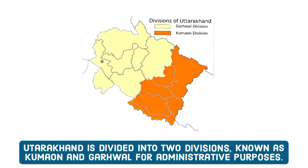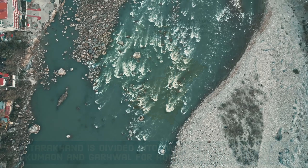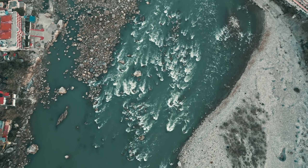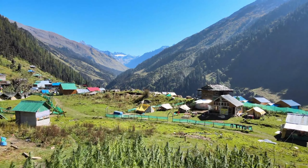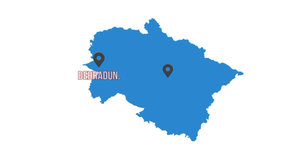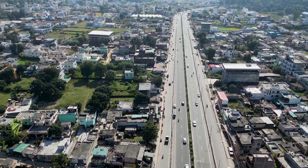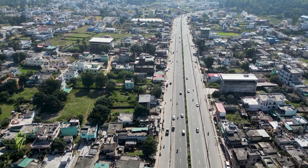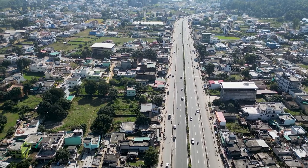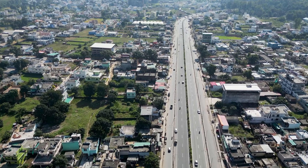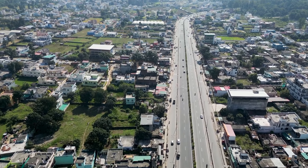Uttarakhand is divided into two divisions, known as Kumaon and Garhwal for administrative purposes. These divisions are further subdivided into 13 districts. The state has two capital cities — Dehradun is its winter capital, while Gairsain is the summer capital. The state has a total estimated population of roughly 11.7 million inhabitants, and the most populous city is Dehradun with a population of roughly a million inhabitants.